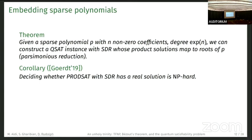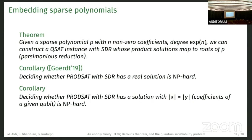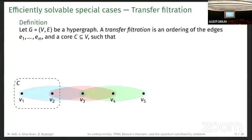This gives us a corollary. We recover the result of Girard: deciding whether a QSAT instance with SDR has a real solution is NP-hard, just because deciding whether a sparse polynomial has a real root is NP-hard. We also get, if we look at a single qubit and want to see is there a product solution where this single qubit has, for both coordinates, the same absolute value, this is also NP-hard. It's a result from Blum.